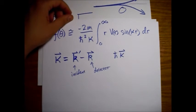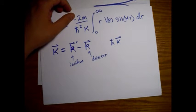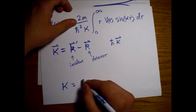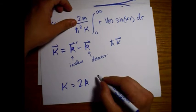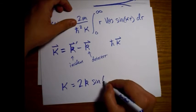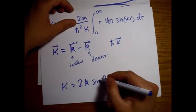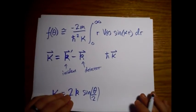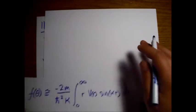If we want to look at the angular dependence, we also have equation 11.89: kappa equals 2k sine of theta over 2.